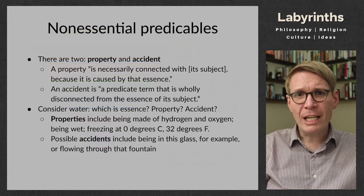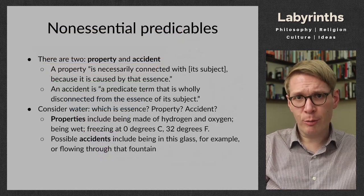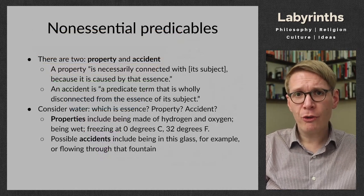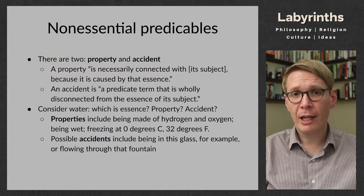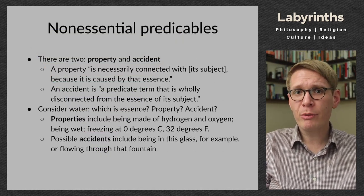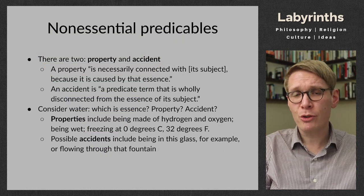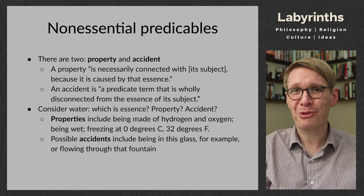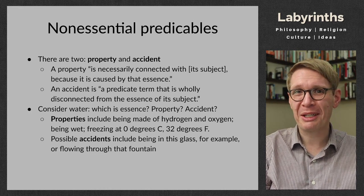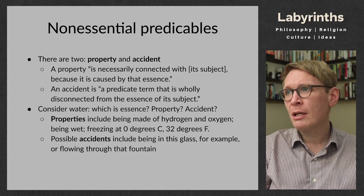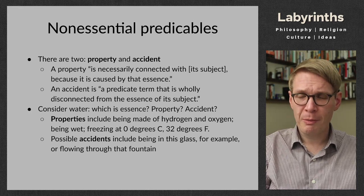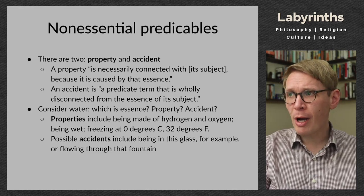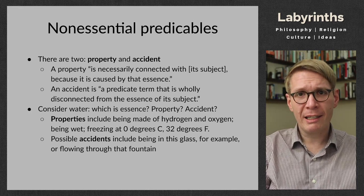So those are the essential predicables: genus, species, and difference — discussed through Porphyry's Tree and various examples of scientific classification. There are also, for Aristotle, two non-essential predicables, and those are property and accident.